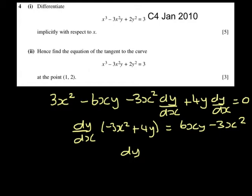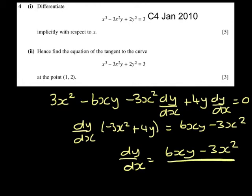That tells me that dy dx equals 6xy minus 3x squared all over minus 3x squared plus 4y.